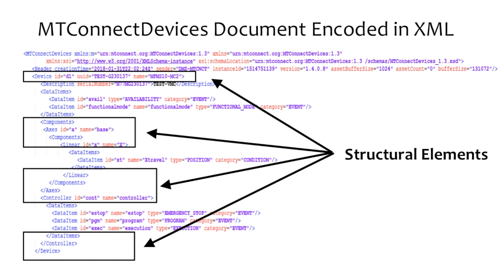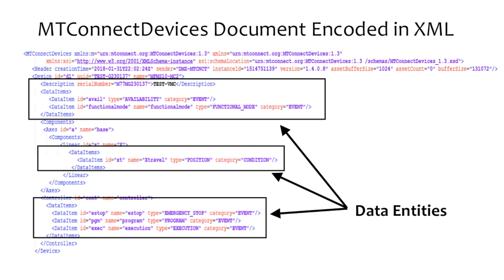The structural elements describe the physical and logical parts of the piece of equipment that will be publishing data, and serve as primary keys used to organize the data received into structured data. The data entities define each piece of data that can be published from a piece of equipment. The MT-Connect Devices document does not provide values for the data, but it does provide all the details for a software application to interpret the data that is provided in an MT-Connect Streams document.